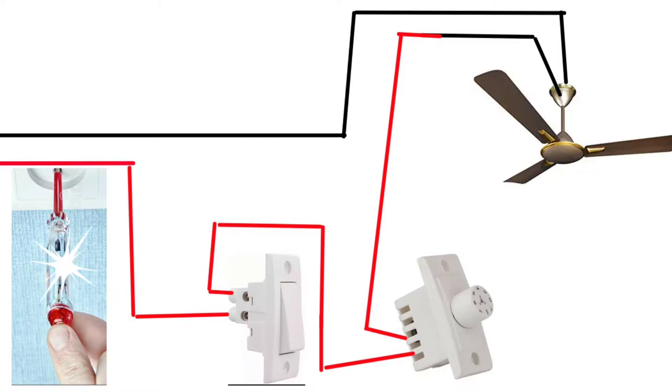We first have to identify the cable. The cable is connected to the fan. The cable is connected to the electrician and it is connected to the switchboard. It is connected to the light and it is connected to the switchboard.